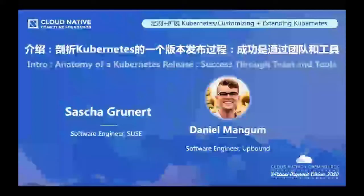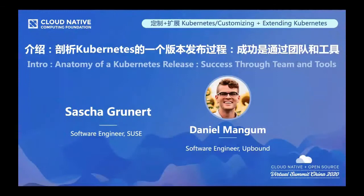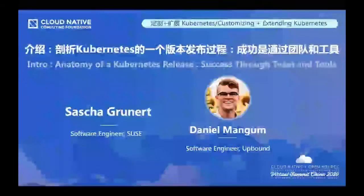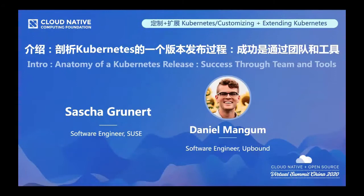The next topic is Sasha Granite, a software engineer from Susie, and Daniel Magam, a software engineer from Upbound. Their talk topic is Anatomy of a Kubernetes Release: Success Through Team and Tools.